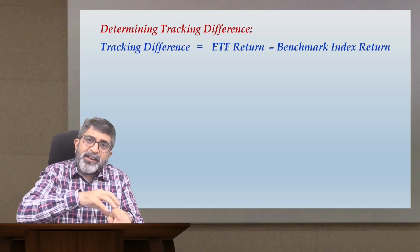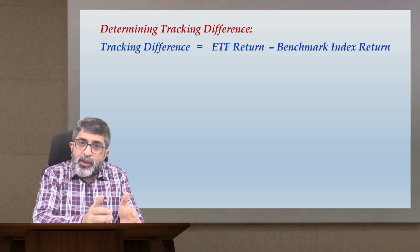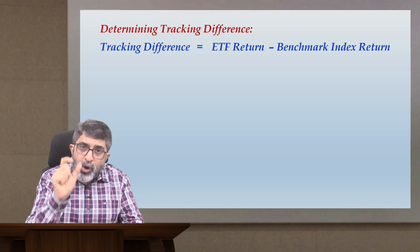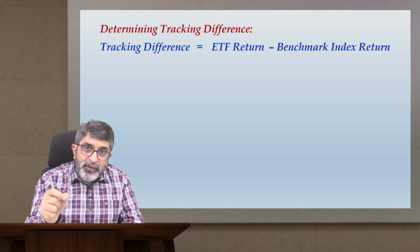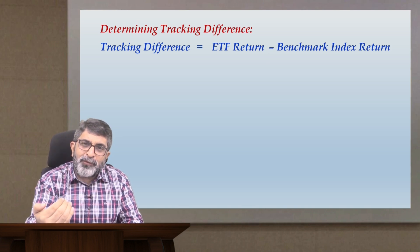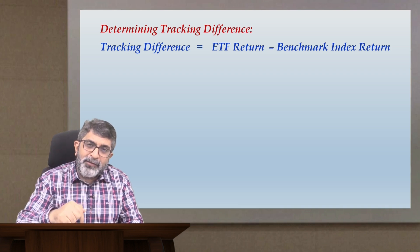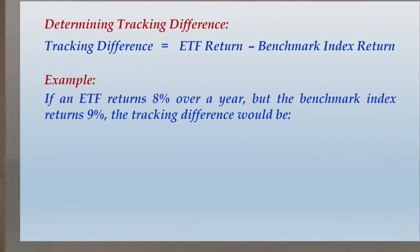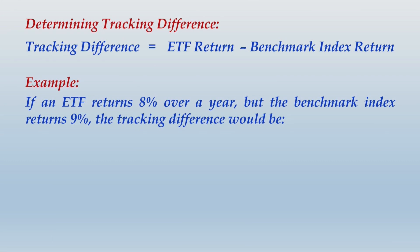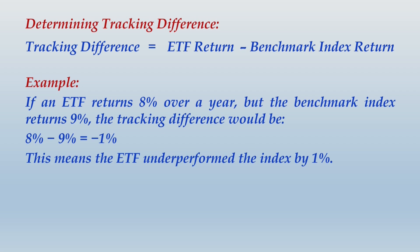You subtract the index return from the ETF return. If the difference is positive, the ETF is outperforming the index; if negative, the ETF is underperforming. For example, if an ETF returns 8% over a year but the benchmark index returns 9%, the tracking difference would be 8% minus 9% = negative 1%, meaning the ETF underperformed the index by 1%.